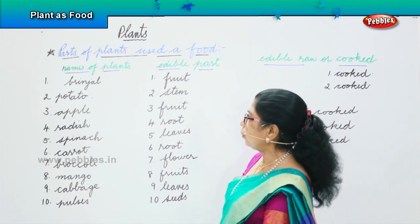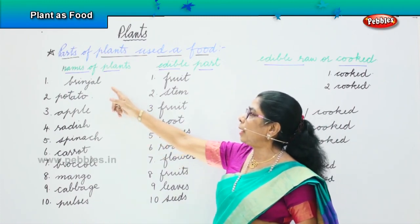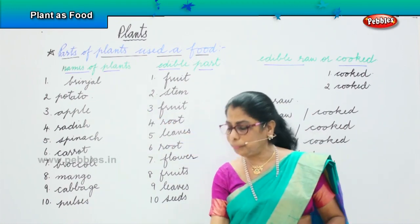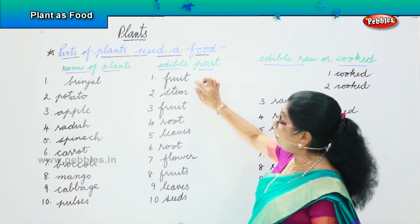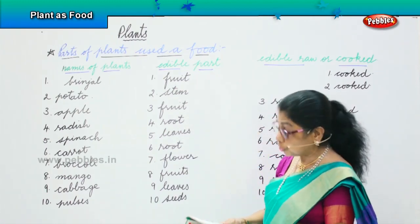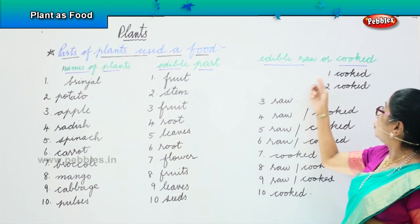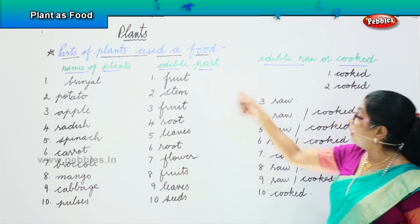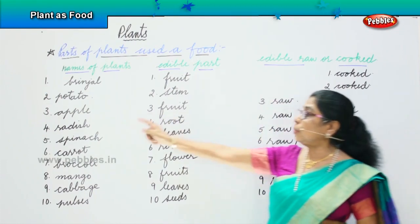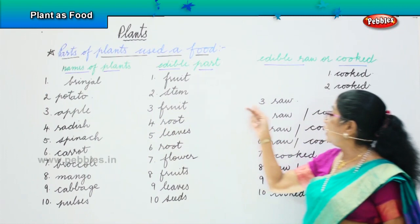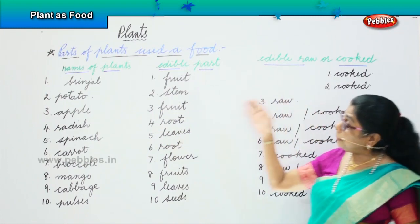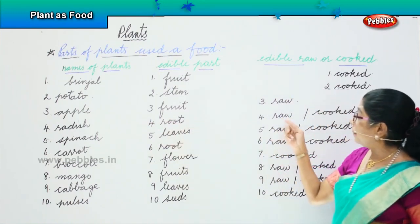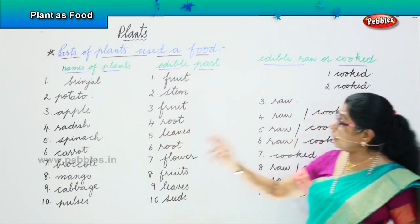First one — brinjal. The part of the plant is brinjal, it's a fruit and it can be cooked and eaten only. Potato is the stem of a plant and it can be cooked and eaten only. Apple is a fruit — it can be eaten raw and it can be cooked also. Radish is the root and it can be eaten raw or it can be cooked too.